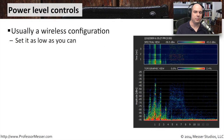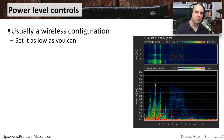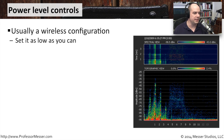A feature that can really help you with security in your wireless access point configuration is controlling how much power you put out. Ideally you would set this as low as you possibly can and still have people communicate. That way you aren't sending your signal out to the parking lot where other people may be able to hear what's going on on your wireless network.